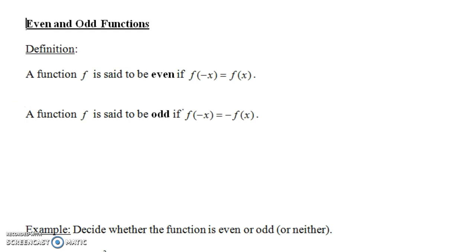A function f is said to be odd if f of negative x is not equal to f of x — it's equal to negative f of x. So in other words, if you take your formula for f of x and replace all of those x's with negative x, you end up getting the negative of your original value. So f of negative 5 would be the same thing as negative f of 5. That definition is a little bit hard to grasp until we start seeing some examples.